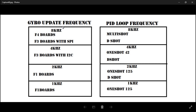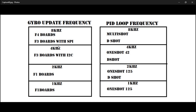For the gyro update frequency, I would always recommend running its max potential, except for the F1 boards. For an F3 board that uses I²C, place it on 4 kilohertz. For an F3 board with SPI, place it on 8 kilohertz. For an F4 board, you can pretty much max everything out — it's not going to make a difference.